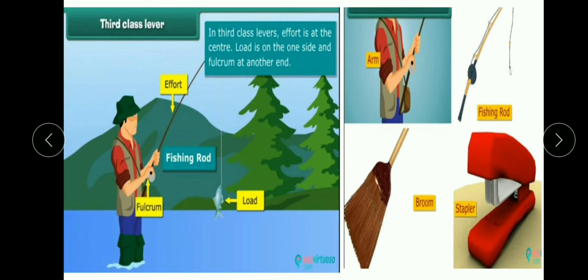Next hai third class of lever. Third class of lever mein fulcrum rod ke ek point par hoga, doosre point par load hoga, aur center mein effort lagta hai. Iske examples hain: arm, fishing rod, broom, and stapler.